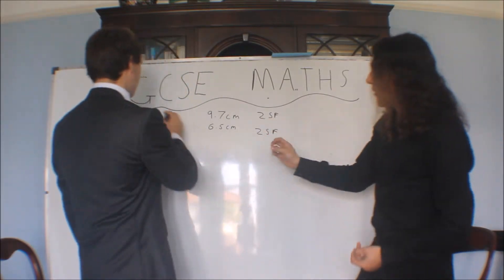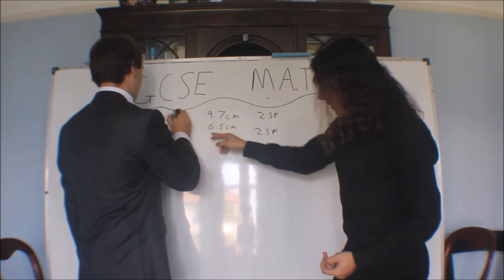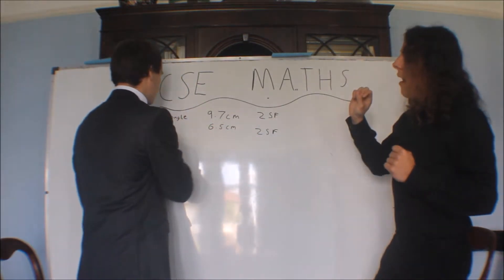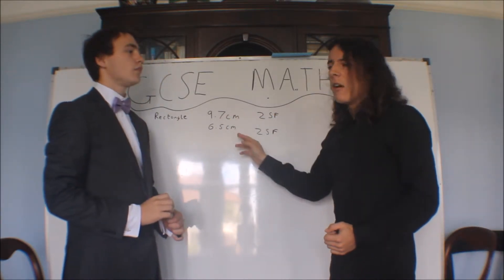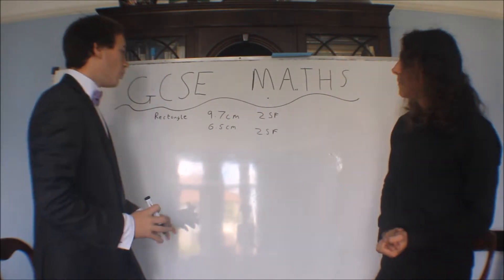So these are two numbers, they've been rounded to two significant figures, that's two numbers there and two numbers there. But it could have been from slightly higher and slightly lower, but how much higher and lower?